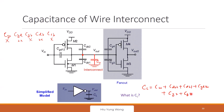Student: Why is C_gd12 considered a load? Professor: Because you need to change the potential there — it is a loading. You need to change the voltage across that capacitor, which means you need to supply charge, or supply current to it. So it is a loading. Note that C_gd12 has one terminal connected to V_in.